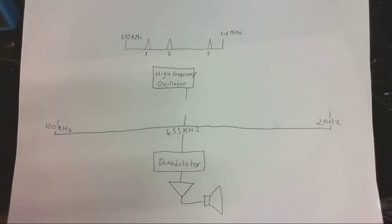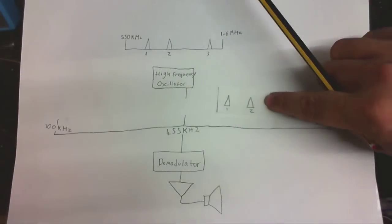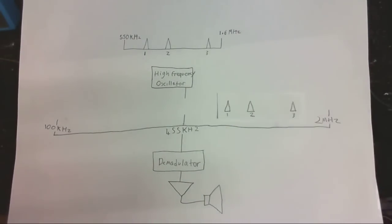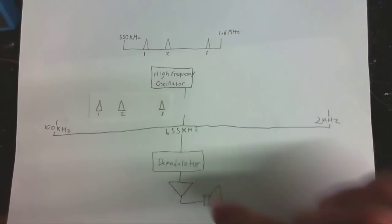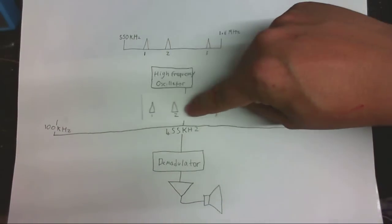And when you do that, you get like a copy of each radio station but at a higher frequency or a lower frequency than what it would normally be. So, with the oscillator on, the stations could appear, say, around here. They could appear around here or somewhere in the middle.